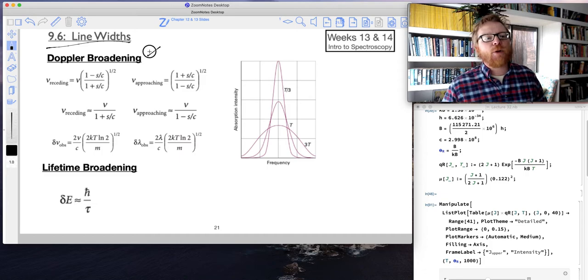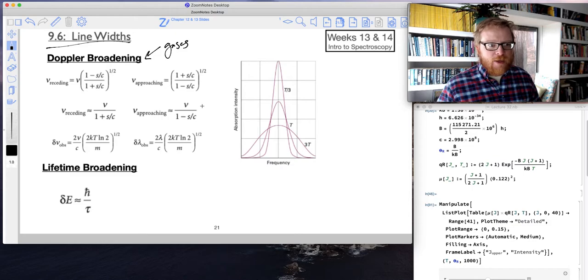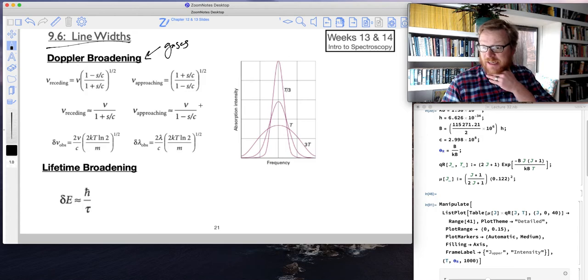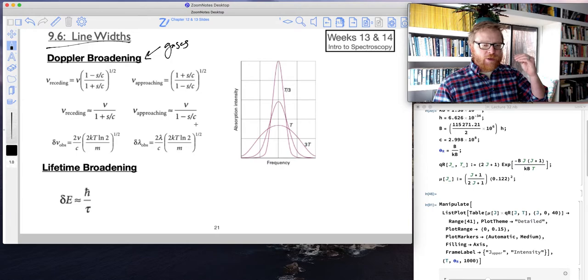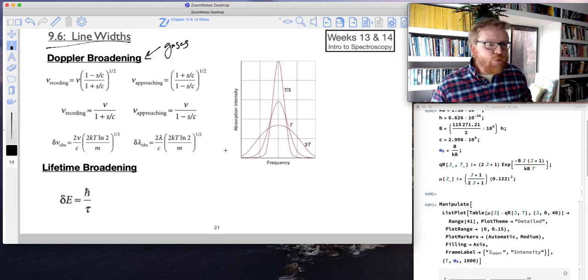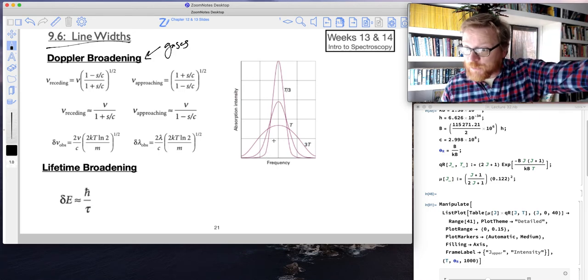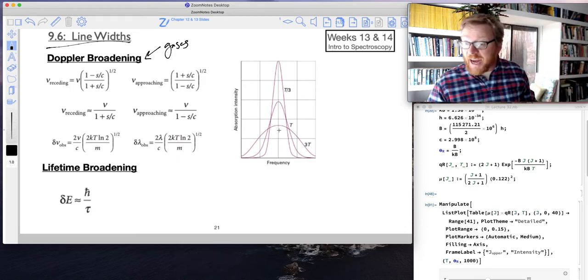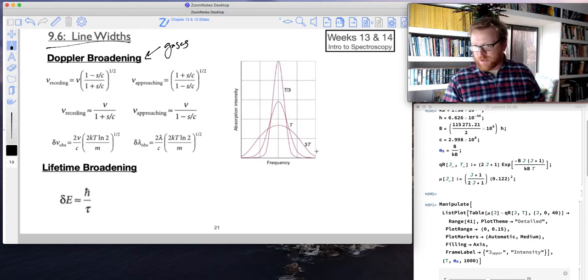This Doppler broadening is only relevant for gases. Because if you recall, the Doppler effect is the change in frequency of an object as it's traveling away from or toward an observer. And you've all observed this all the time. The classic example is the ambulance or the police car that's driving by you. You can hear the frequency of the siren change as it's approaching you and then as it's receding from you. So that's due to the Doppler effect.